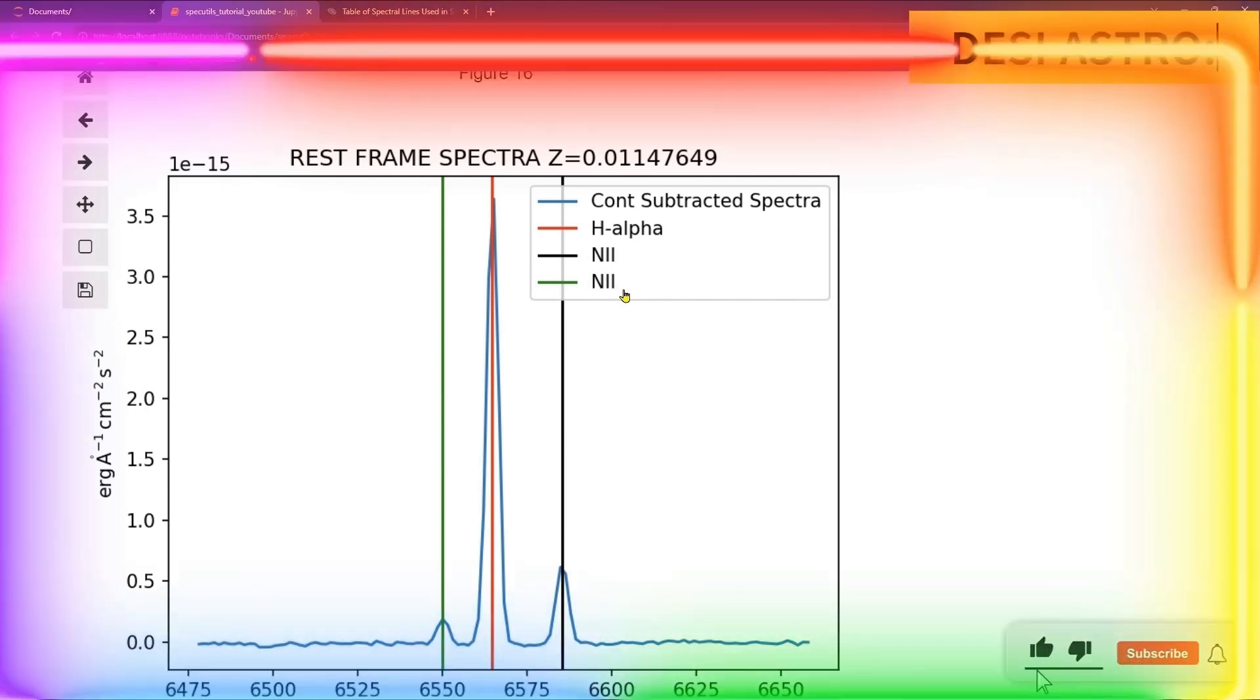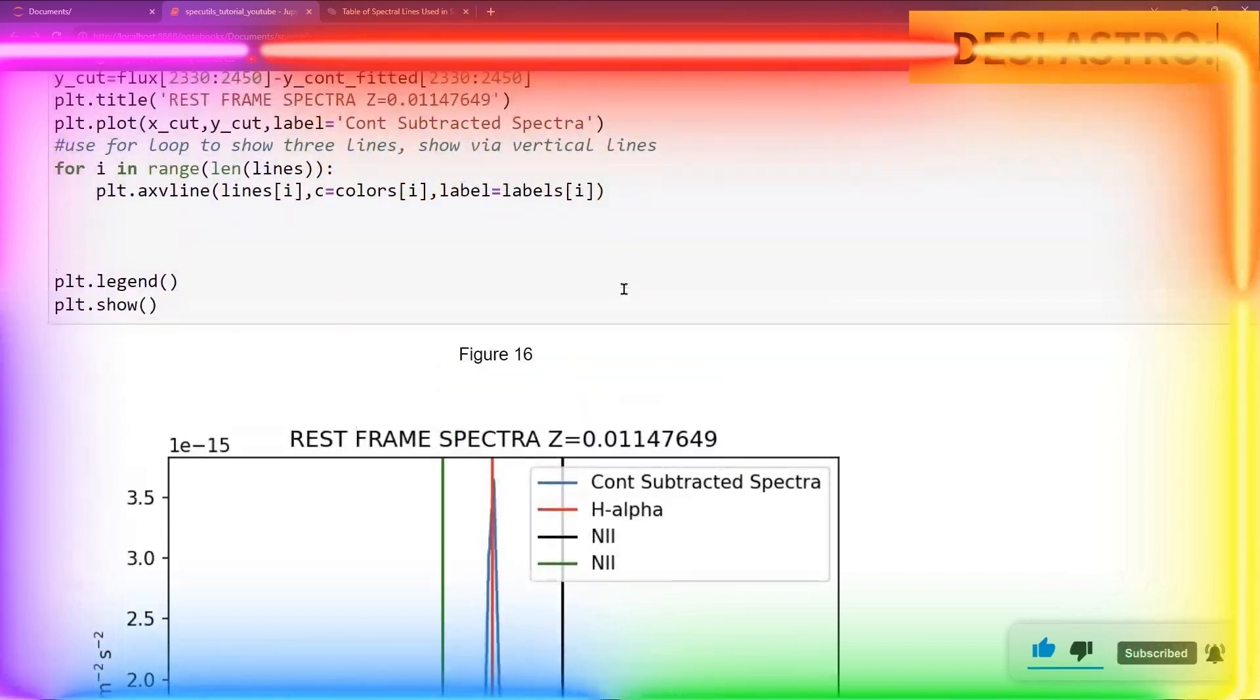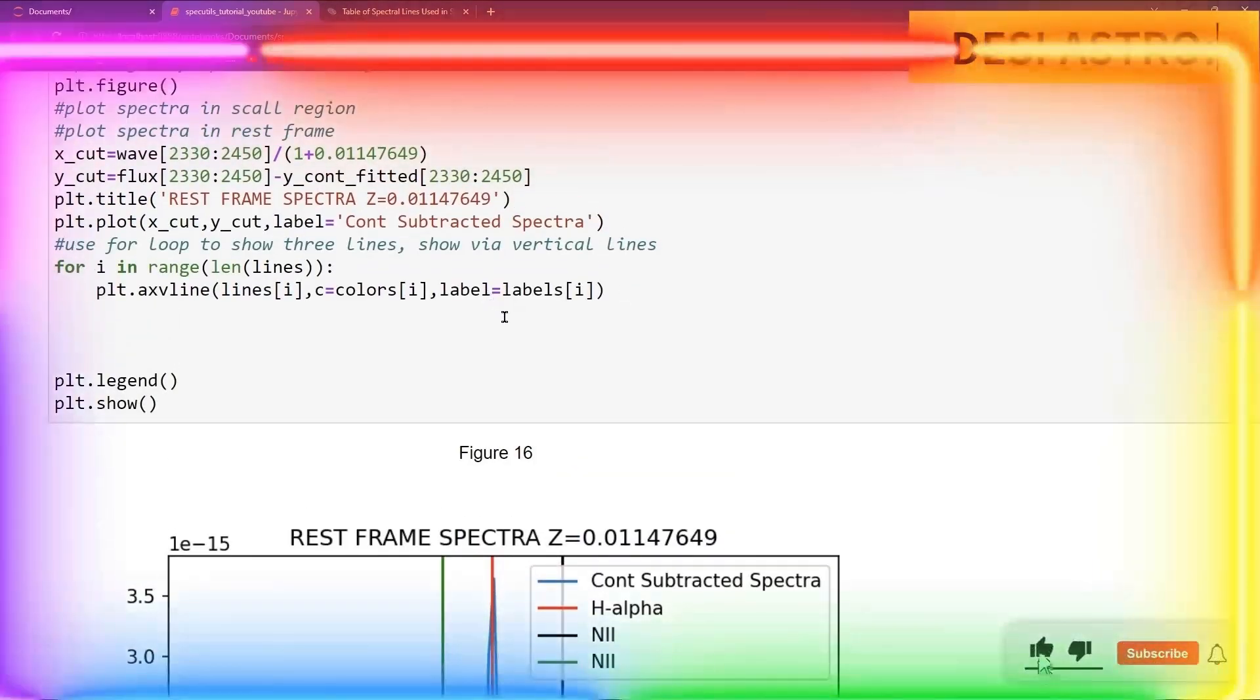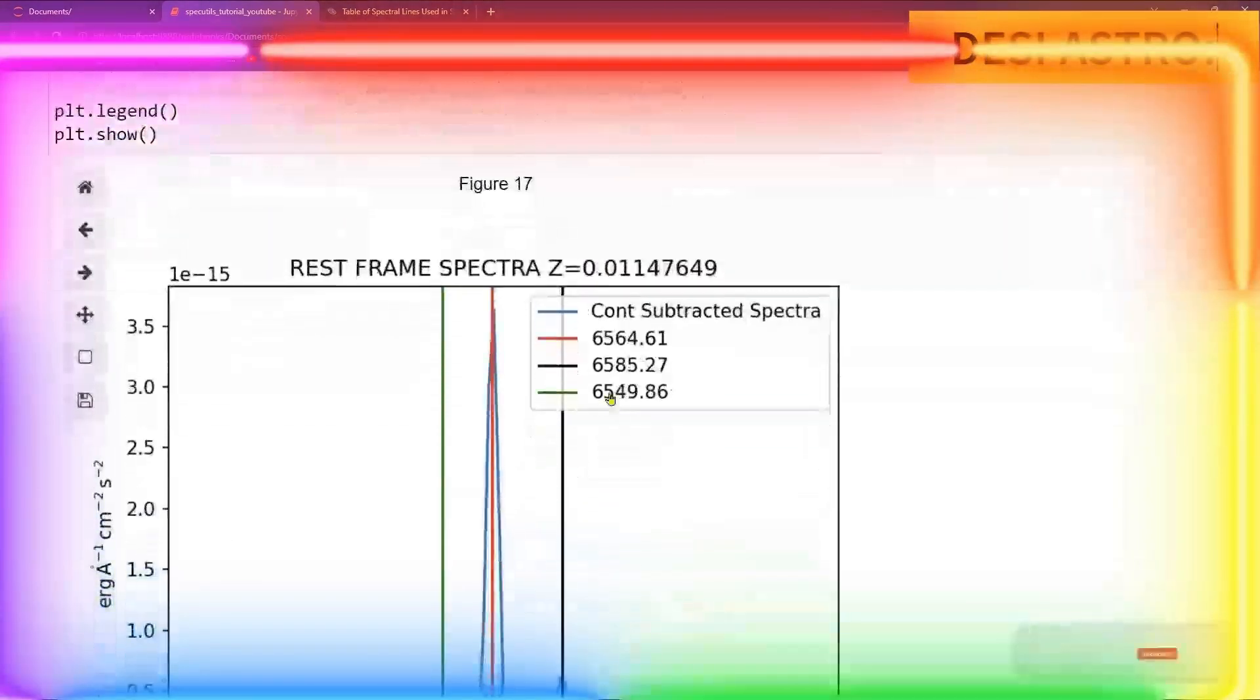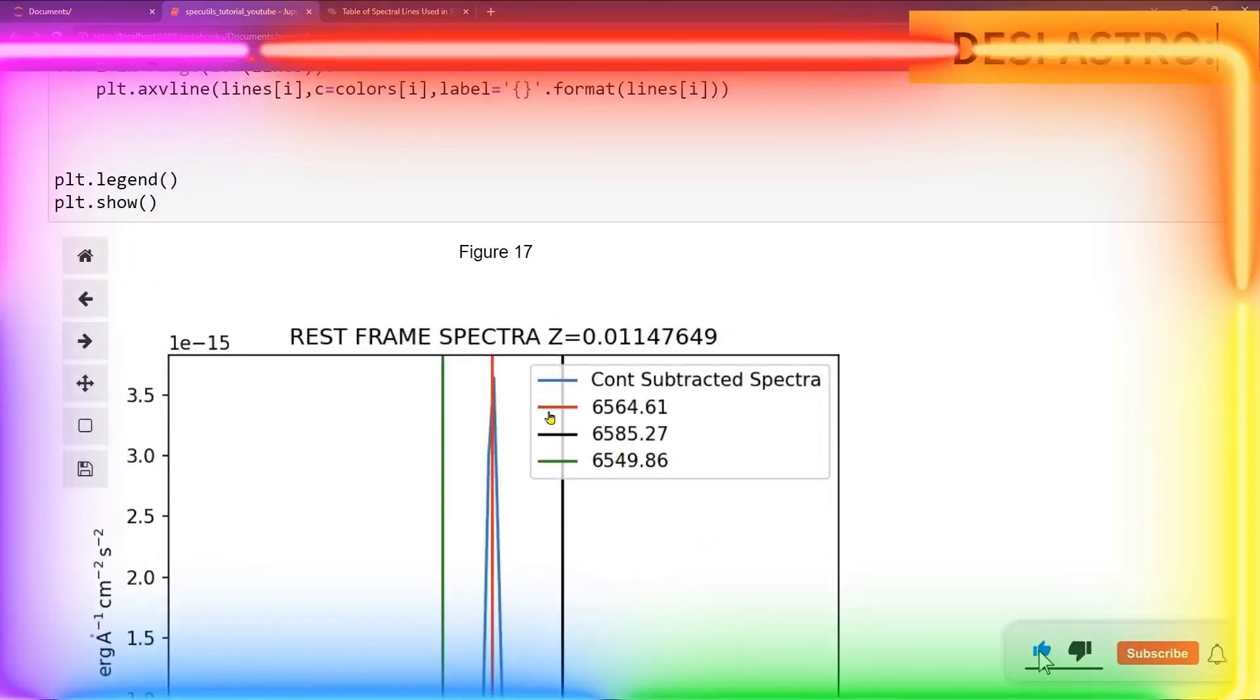Now if you want, you can also put your rest wavelength. For doing that, you need to go here and give a string and give a bracket and then go for formatting. Format lines of i. Now run it. Here you got that you have these lines at what wavelength, but you are missing the line names.